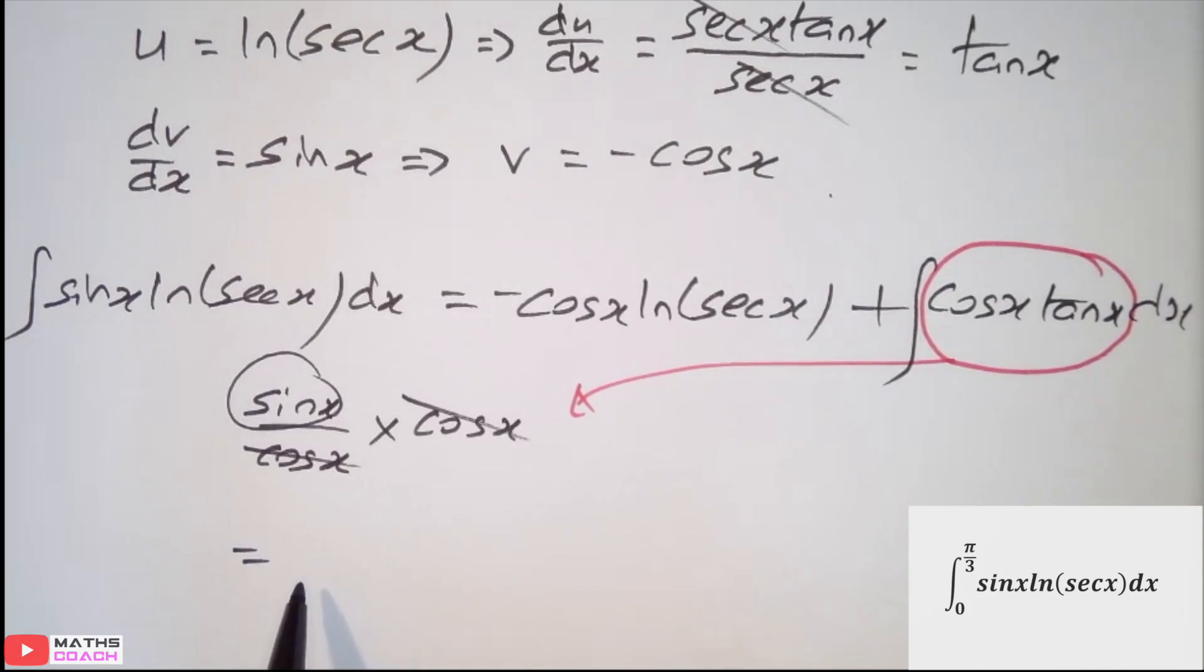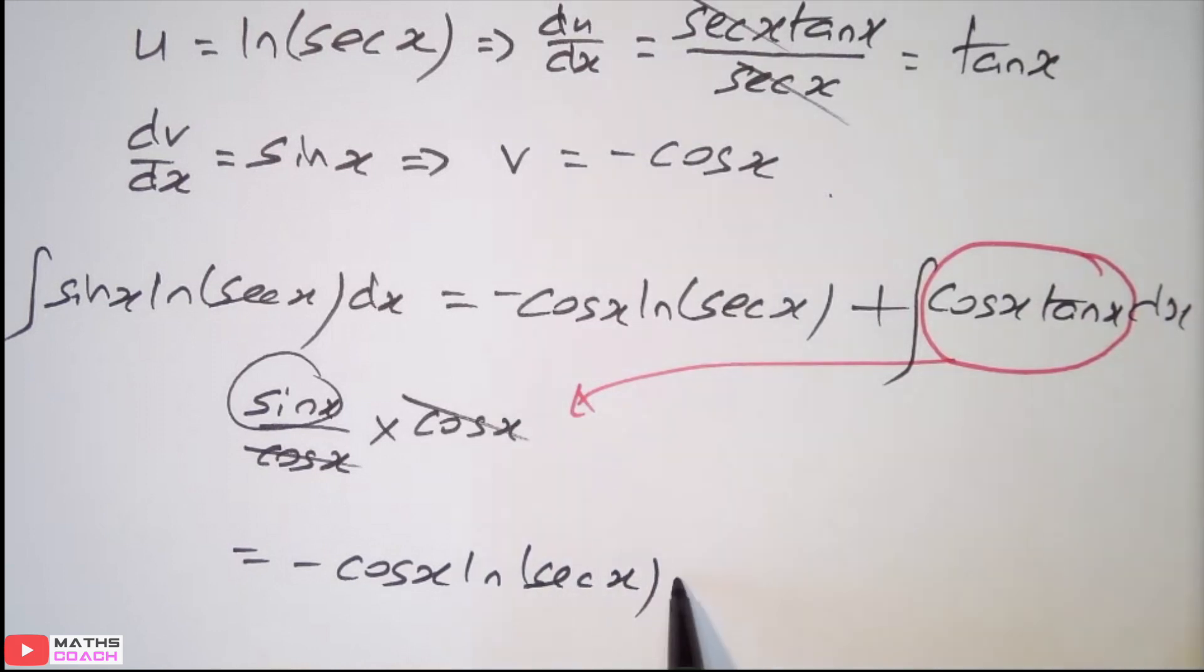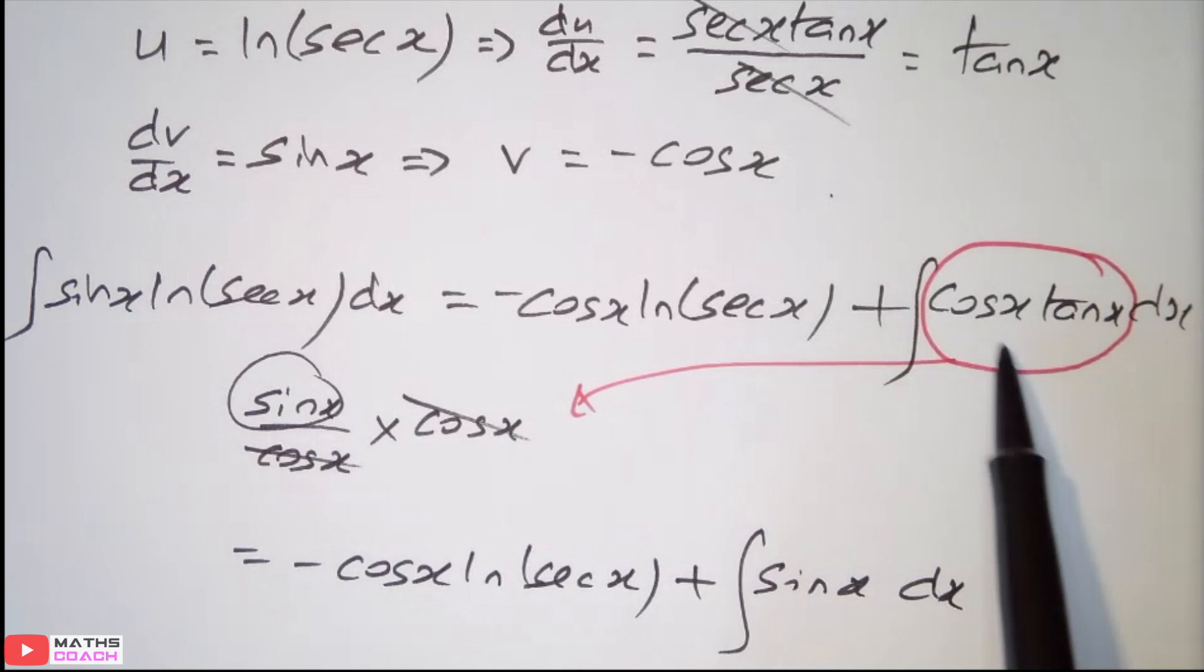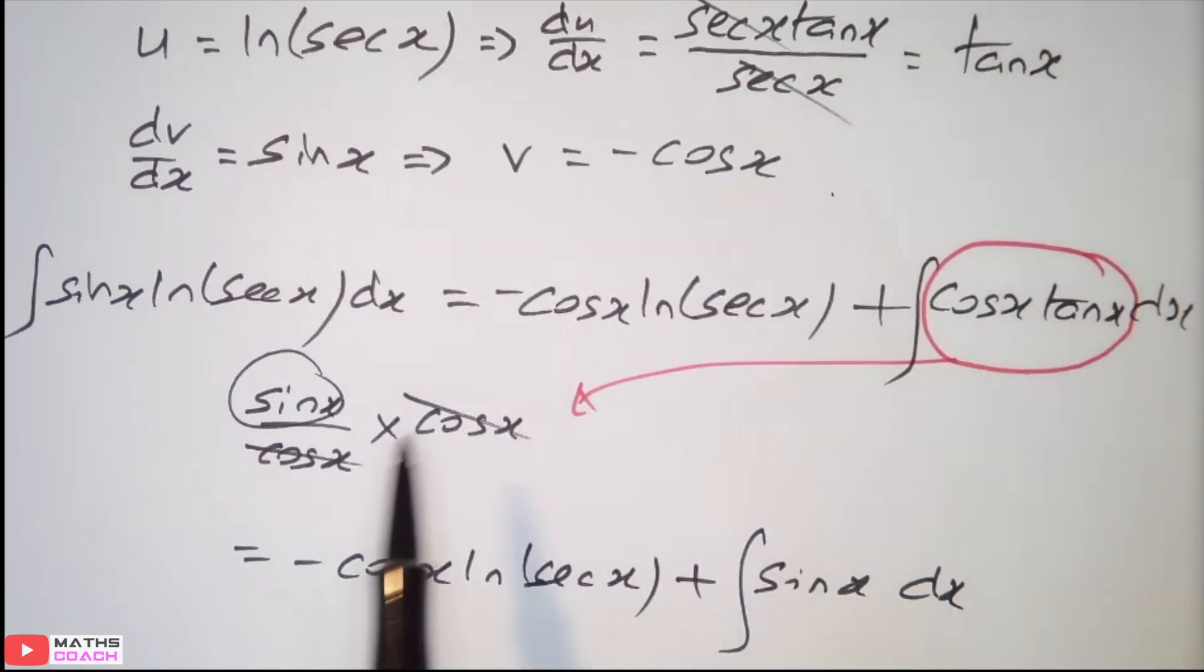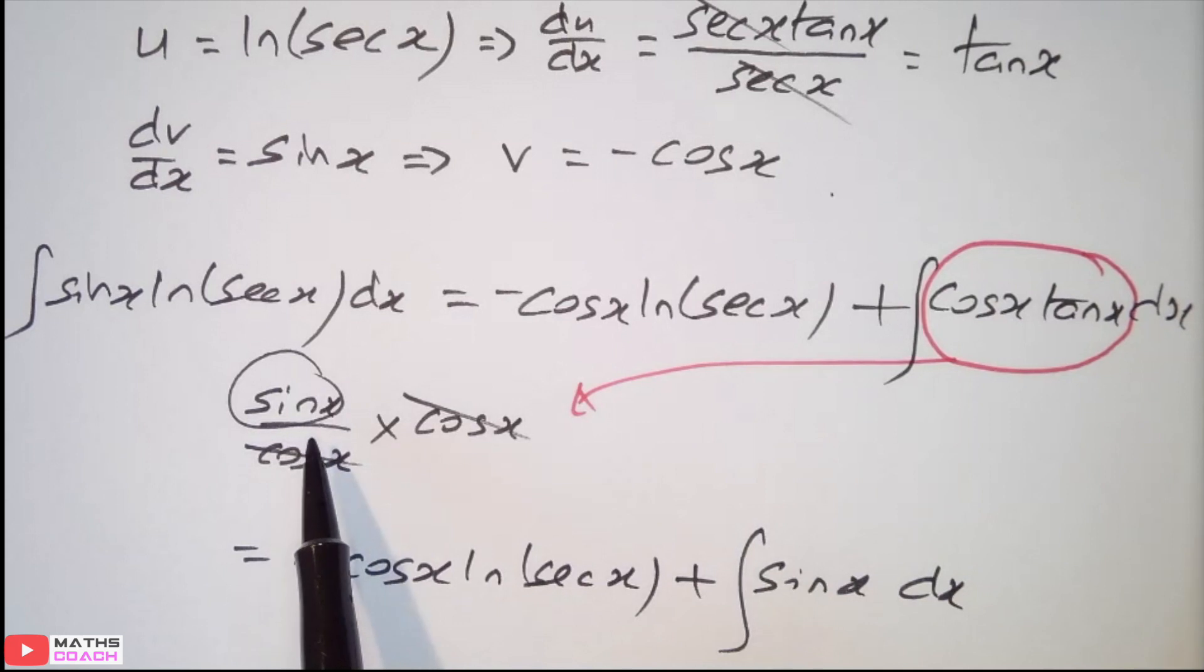So, if we look at our next line, we have negative cos x ln sec x. That can be naturally brought down. Add the integration of sin x. Really important that you understood simplifying this expression cos x tan x to become simply sin x.